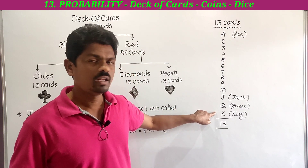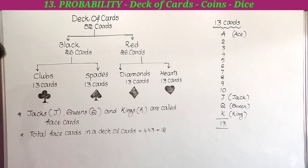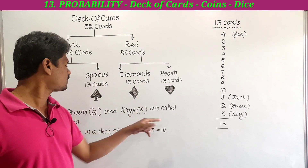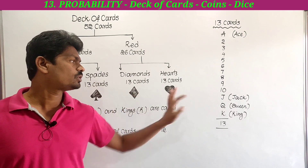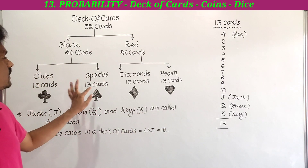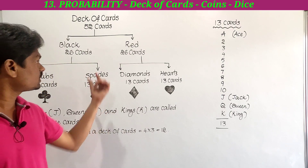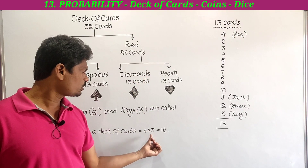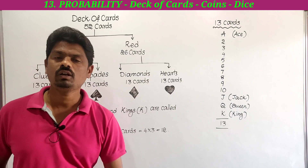In each suit, there are 13 cards: numbered cards from 2 to 10, then jack, queen, and king. Jack, queen, and king are called face cards. Each suit has three face cards, and there are totally four suits, so total face cards in a deck of cards equal to 4 into 3, which is 12.